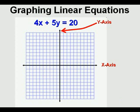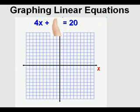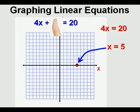The strategy we'll use has us find the x-intercept and the y-intercept, then graph the equation by drawing a line through the two points. We solve for the x-intercept by covering up the y-term — I like using my thumb for that. With the thumb covering the y-term, we have 4x equals 20. We divide by the coefficient of x, which is 4: 20 divided by 4 equals 5. The x-intercept is 5. Mark that point on the x-axis.